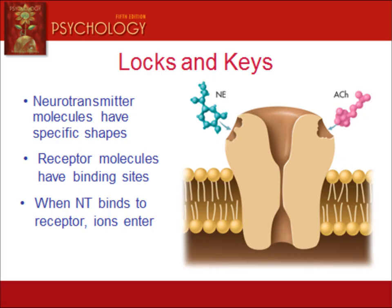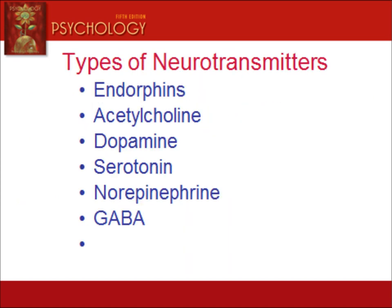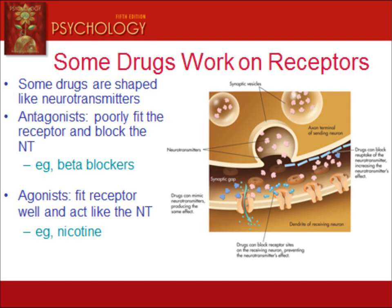Consider the awesome power of neurotransmitters, since these messengers participate in many behaviors and mental processes. Endorphins affect perception of pain. Acetylcholine affects intellectual functioning, memory, and learning. Dopamine affects various muscle functions, learning, and pleasure. Serotonin affects sleep, moods, and emotional states. Norepinephrine affects neural activation, memory retrieval, learning, and physical arousal. And GABA inhibits brain activity.